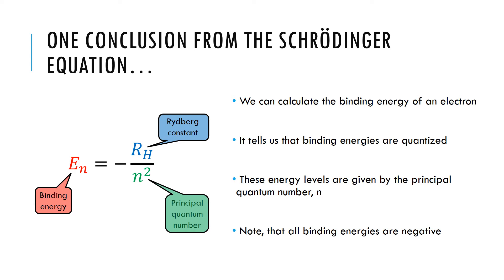I introduced the Schrödinger equation in the last lecture. One of the key conclusions from the Schrödinger equation is that we're able to calculate the binding energy of an electron — this is how tightly the electron is held by the nucleus of the atom. The Schrödinger equation tells us that the binding energies are quantized, so electrons reside in energy levels as you move away from the nucleus. We give these energy levels a quantum number called the principal quantum number n. We can calculate the energy associated with each level using the equation shown: the binding energy equals the negative of the Rydberg constant divided by n squared, where n can be any positive integer 1, 2, 3, 4.